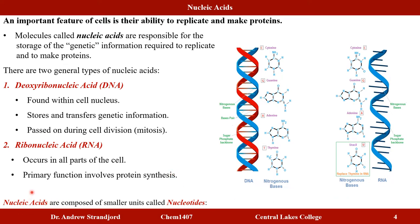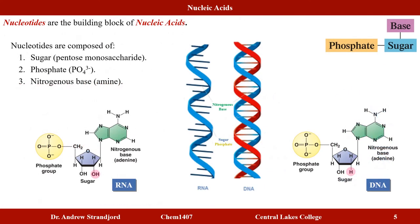Nucleic acids are composed of smaller units called nucleotides. We can think of nucleotides as the monomers and DNA and RNA as the polymers, bringing these smaller groups together to make larger molecules. Nucleotides are the building blocks of nucleic acids — both RNA and DNA strands.